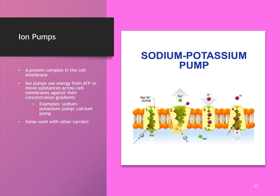Ion pumps are our first example of active transport. These ion pumps insert themselves into the phospholipid bilayer. We have sodium-potassium pumps, sodium pumps, potassium pumps, and calcium ion pumps. Each pump is specific to a certain ion. This is really important when we think about how a nerve impulse moves across neurons or nerve cells.